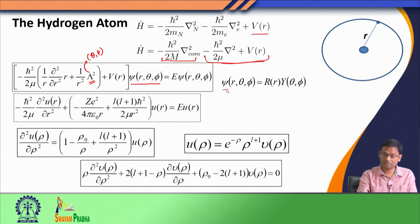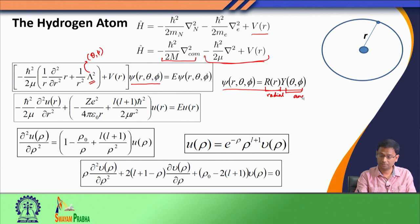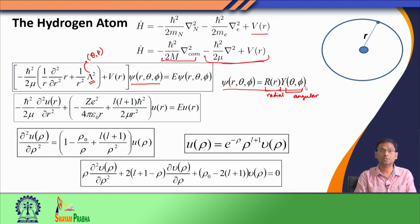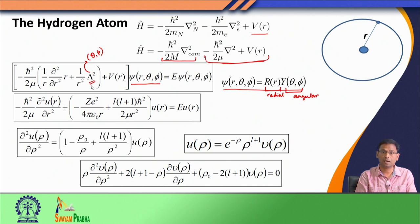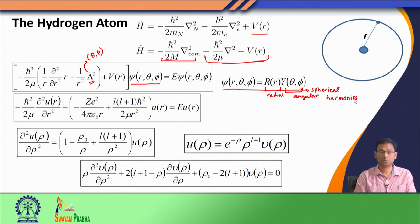We expressed the total wave function as a product of two functions: one radial, one angular. When we look at the angular function, we see that the lambda squared operator is closely related to L squared, the orbital angular momentum operator. Therefore, the angular functions we should take are the spherical harmonics — they are the eigenfunctions of the L squared operator.